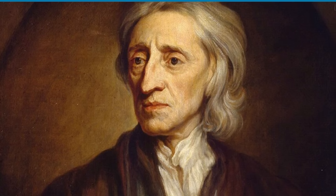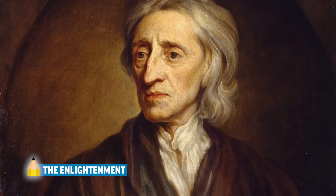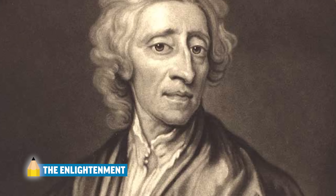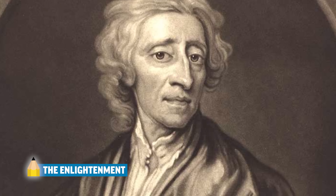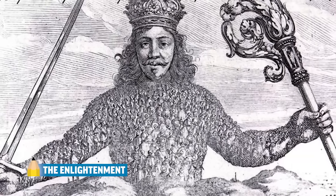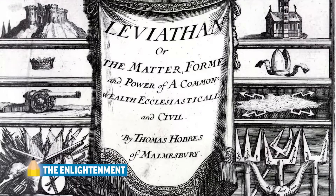Where scientists in the Scientific Revolution tried to figure out the laws that govern the natural world, philosophers in the Enlightenment tried to figure out the laws that govern human society. John Locke believed that people were born with natural rights — life, liberty, and property — and that it was the duty of the government to protect those rights. Locke advocated for revolution against a government that didn't protect those rights. Hobbes supports absolutism because he believes that in the state of nature, life would be solitary, poor, nasty, brutish, and short.